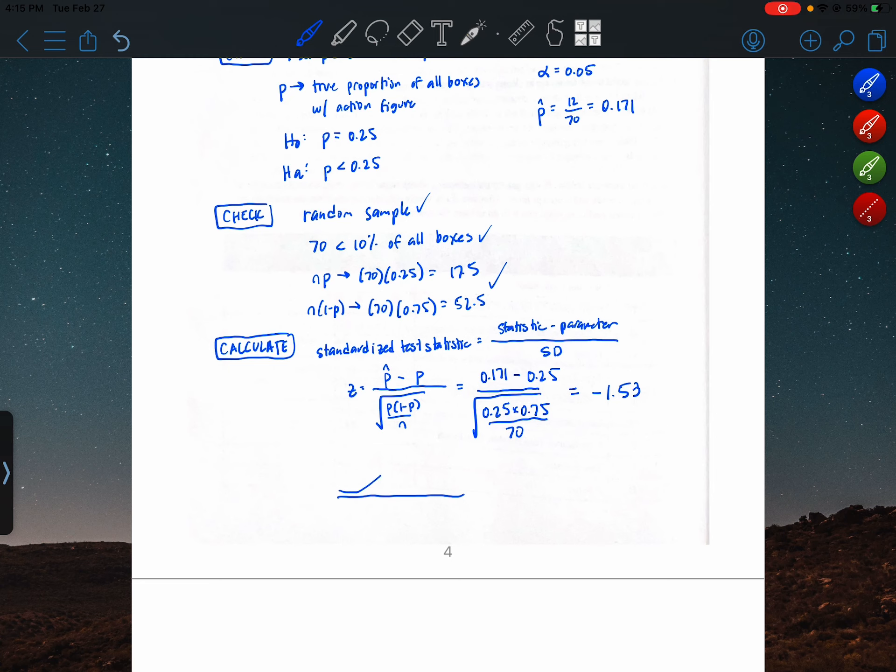Now we would like to know the probability of getting a test statistic or an outcome as extreme or more extreme as this. So we're going to use a standardized normal distribution since our test statistic is standardized. Negative 1.53 is going to be in the left tail. Our alternative hypothesis is looking for evidence of a lower proportion, and so we're going to be shading the left tail. Off screen I'm just going to use normal CDF to get that tail area. So second vars normal CDF. Lower bound will be negative 99999, upper bound will be negative 1.53. Mean 0, SD 1. And the p-value is about 0.063.